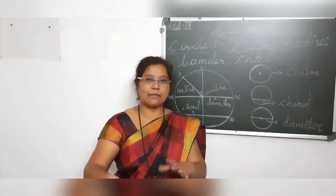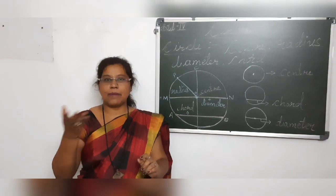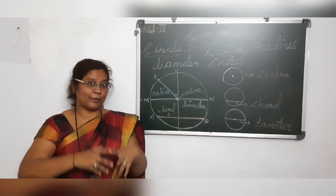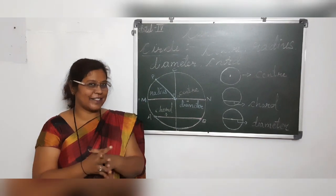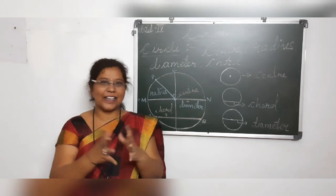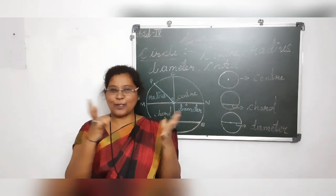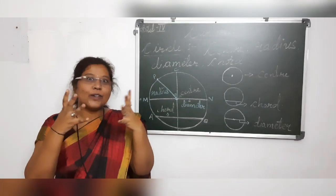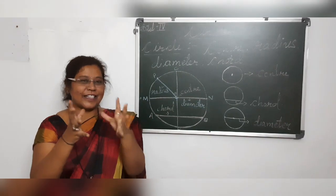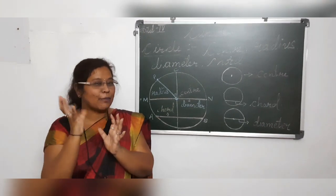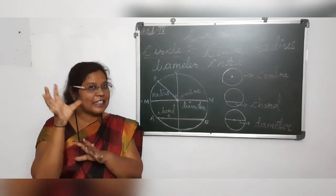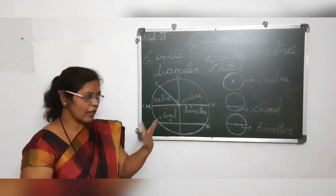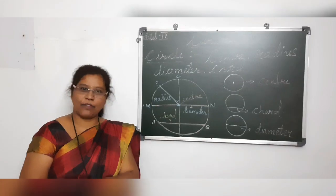Some more examples of circle are a bicycle wheel and a cart wheel. And in eatables we have pizza — pizza shape is also a circle, a round shape. And when your mother cooks nice delicious soft chapatis, the shape of the chapati is also a circle, a round shape. There are many more circle or round shapes.